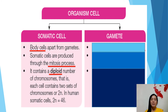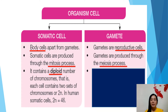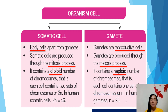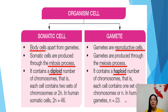Now we look at the gamete, or reproductive cell — sperm and ovum. It is produced through the meiosis process, another type of cell division. It contains a haploid number of chromosomes. Diploid means two sets, while haploid means one set of chromosomes, or n. In human gametes, n equals 23 — that means 46 divided by 2 equals 23.